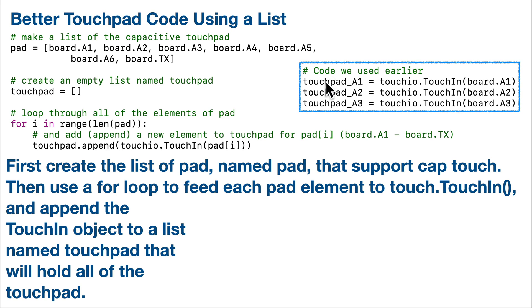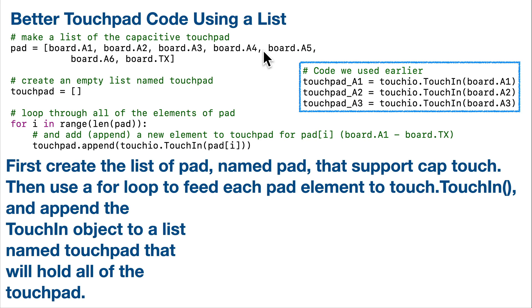So first, instead of creating a separate touchpad variable for each touchpad, we're going to create a list named pad, and that list will be filled with the location of all of the touchpads — board dot A1 through board dot TX. We've seen that we can create lists from strings, numbers, and even colors, but we can also create lists using these board dot locations A1 through TX.